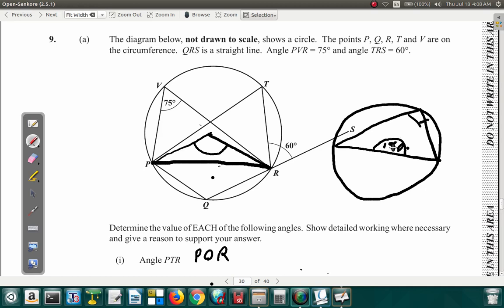When you have an angle lying on a chord, that angle is twice the angle that lies on the same chord at the circumference. Or let me say that again: the angle that lies on a chord at the center is twice the angle that lies on the chord at the circumference in the same segment. The chord here is PR.